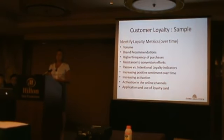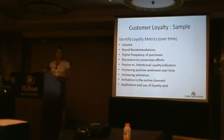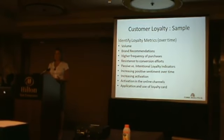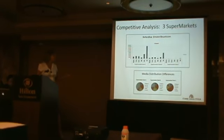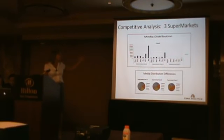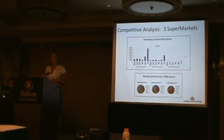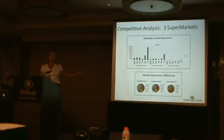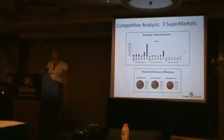Taking that further, once you've put together the activations and done your predictive modeling to identify propensity for loyalty, we have about 60 loyalty metrics. A few examples are around volume, brand recommendations, frequency of purchases, resistance to conversion efforts, and increases in specific types of activation. In terms of competitive analysis, the top graph shows supermarket A has a high volume of comments around the brand; supermarket B has about half of that; and supermarket C has almost none. Not only is supermarket A's volume double, but there's a lot more happening on Twitter — shown in the blue section of the pie. For supermarket C, most activity is happening in forums.